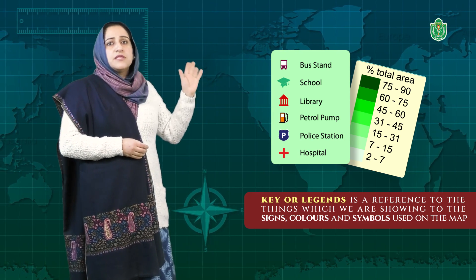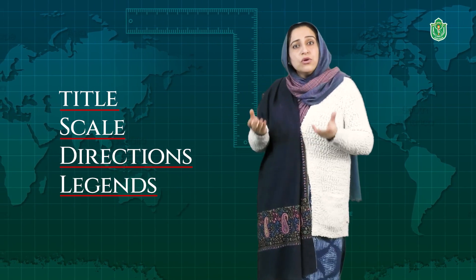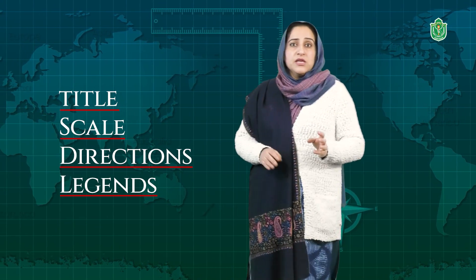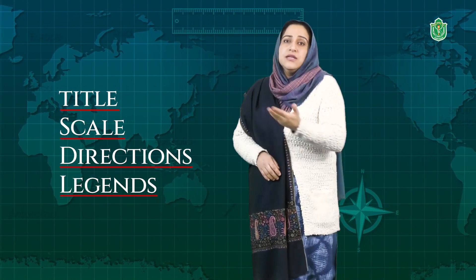The key or legend gives clear understanding of what is shown on a map. These are the important essentials of a map. If we lose any one of them, we cannot call it a complete map — because a map is complete only when all essentials: title, scale, directions, and legend are present. Without them, we cannot understand or call it a proper map.